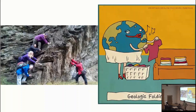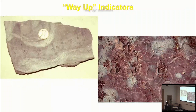Because sometimes rocks can be tilted to 90 degrees or even 180 degrees — turned all the way upside down — it's good that we have what we call way up indicators: features on the top of a layer of sediment that tell us what the original direction up was. Things like raindrop marks, because rain comes from the air and goes down onto the ground. Or mud cracks, which start wide and get narrower at the bottom — so that will give us the way up.